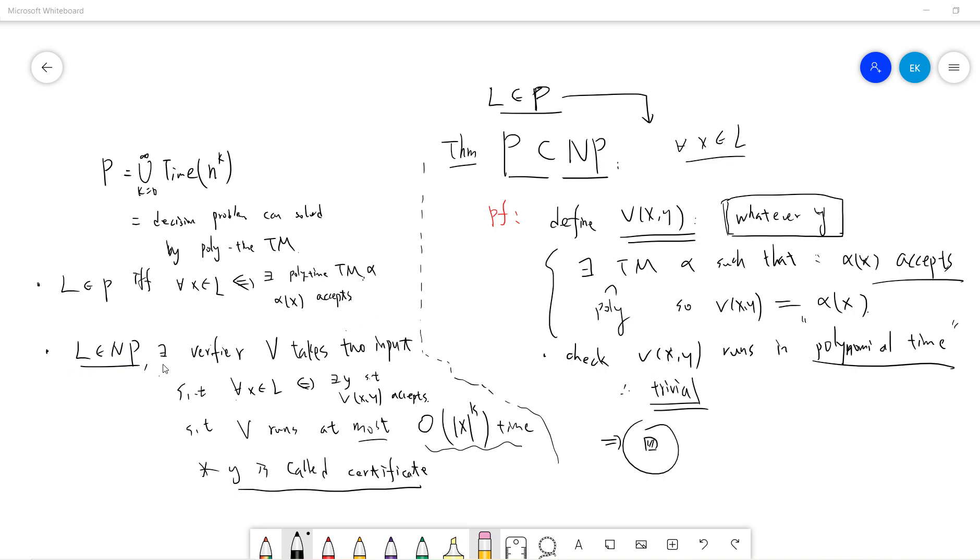Okay, and l belongs to NP means that there is a verifier that v takes two inputs, such that, right, so everybody remember NP is the non-deterministic polynomial time, means that for each x belongs to l, there exists y such that v of x, y accepts.